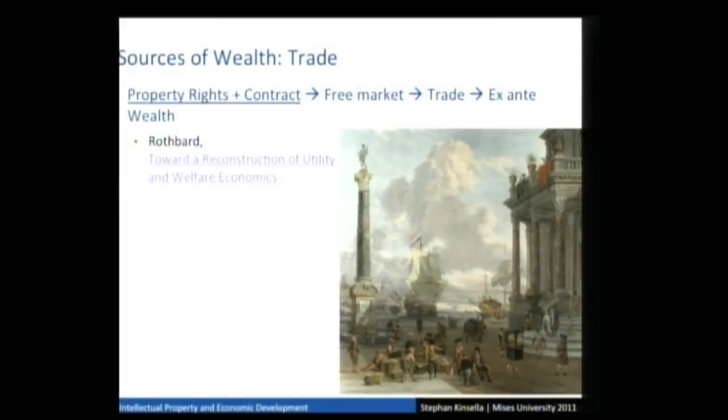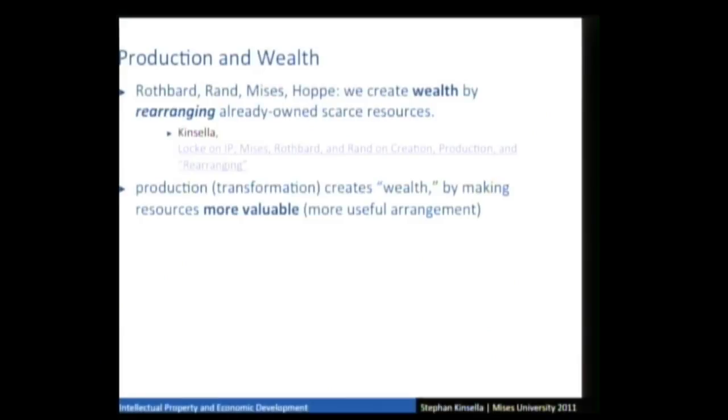This is implicit in Rothbard's total reconstruction of utility and welfare economics. The only way to guarantee that wealth is generated and everyone is better off is if there is no aggression and property rights are respected. Contract simply means the right of the owner of property to do what he wants with it — to grant permission for someone to use his property, or to sell it to others. When you have property rights and contract, you have a free market that leads to trade, and wealth is created. In production, this is recognized by Rothbard, Rand, Mises, and Hoppe — we create wealth by rearranging resources that we already own.